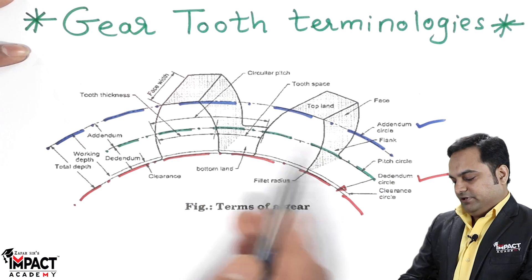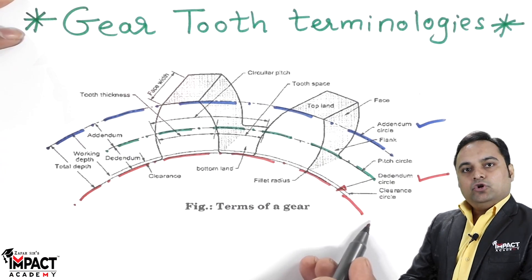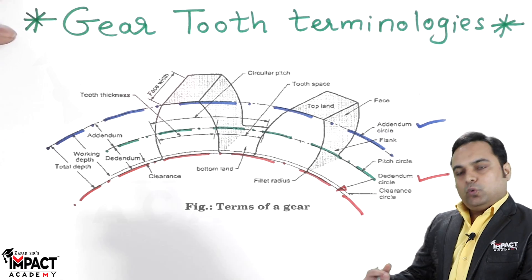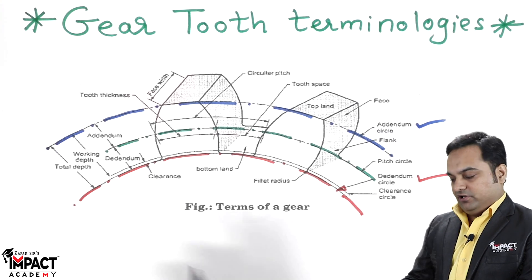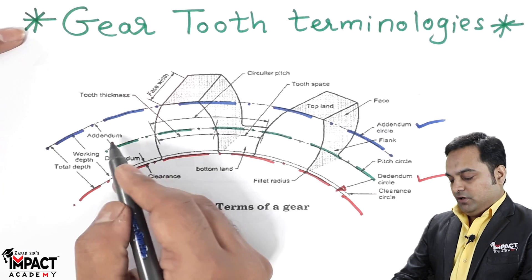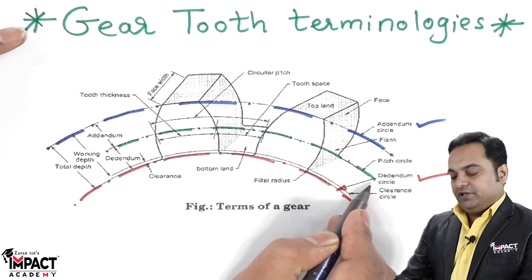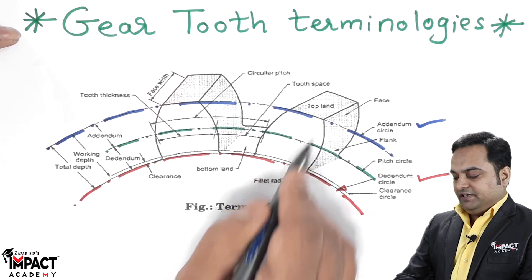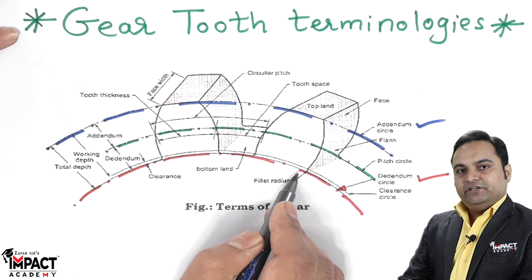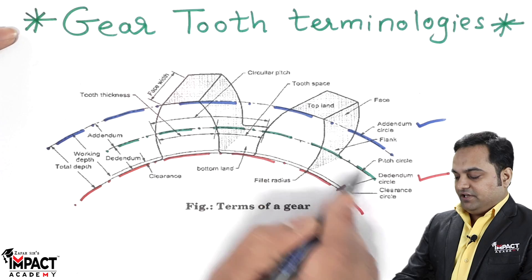So we have three different diameters: addendum diameter, pitch circle diameter, and dedendum diameter. When we take the reference in the case of gear teeth, we take the pitch circle diameter, which is in between the addendum and the dedendum diameters.